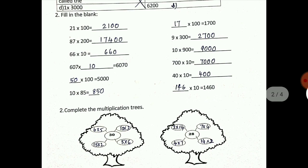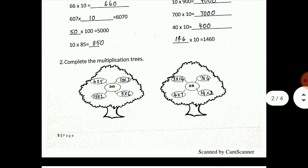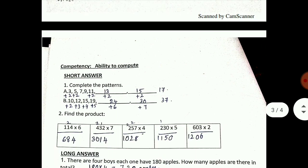Complete the multiplication trees. Here they have given 30 in the middle. So what numbers multiply to give 30? 6 fives are 30, 5 sixes are 30, 10 threes are 30, 15 twos are 30. Same way for 28: 2 fourteens are 28, 14 twos are 28, 7 fours are 28, 4 sevens are 28.